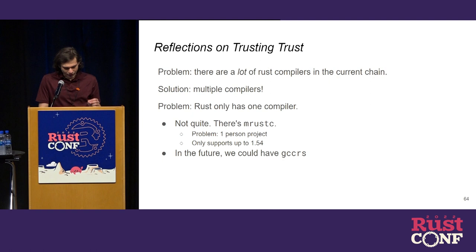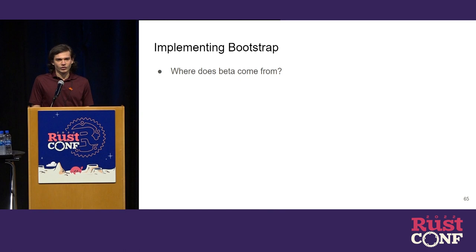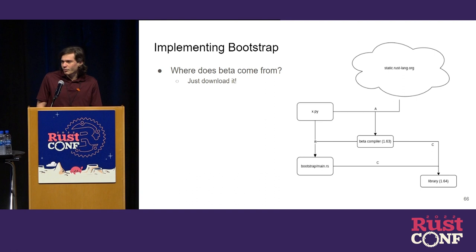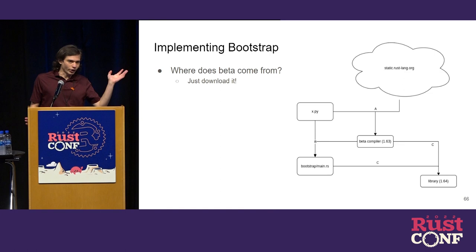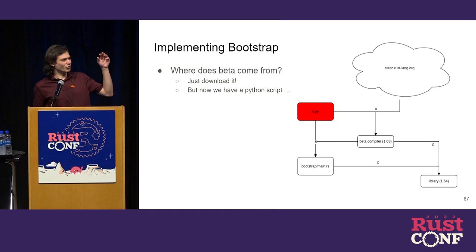I talked a bit earlier about how we use beta to compile nightly, but I didn't mention where beta comes from. Most people working on the compiler don't have beta installed — they use nightly, sometimes stable — and we have a lot of trouble getting people to use beta. So how do we get it onto people's systems? The answer is we just download it: we have a little Python script that reaches out to a website, downloads the beta compiler, builds our build system, and then the build system uses the beta compiler to build the standard library. The problem is that now we have a Python script, and if you're working on the compiler you probably don't want Python installed. You have to figure out Python 2 vs 3, and it turns out there's no version of Python with a name that exists on every platform — it's a whole mess.